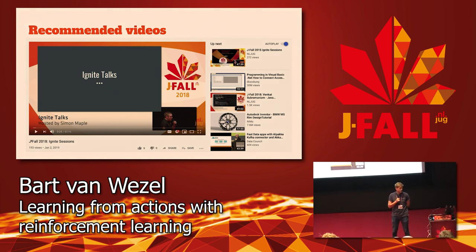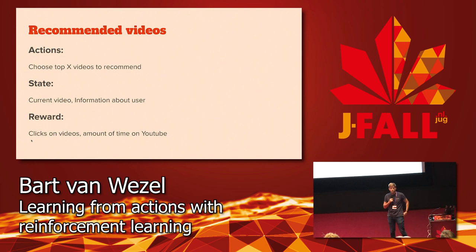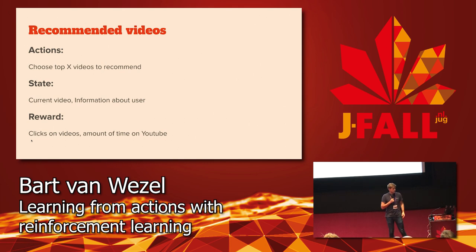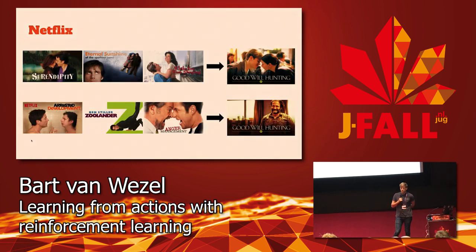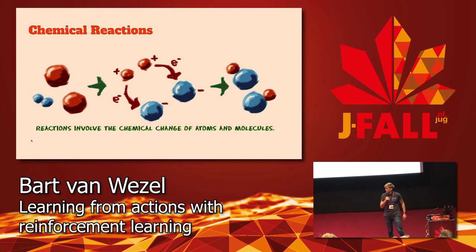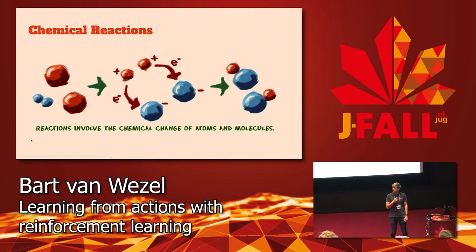How is this used in real-world applications? Many recommendation systems are based on reinforcement learning. On YouTube, the action is choosing a top-X list of videos to recommend. The state is based on the current video you're watching and your user history — if you've watched a lot of cat videos, a cat video is more likely to be recommended. The reward is whether you click on a video and how much time you spend watching.